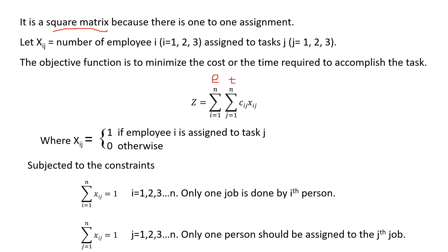The constraints state that the summation of xij over j equals 1, meaning only one task is done by a single person — the number of tasks done by a single employee is 1. Similarly, the summation of xij over i equals 1, meaning only one employee is assigned to each task j, enforcing the one-to-one correspondence.